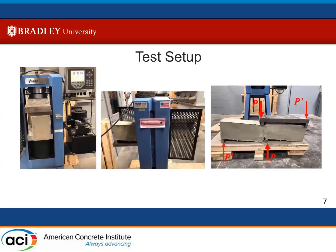My test setup used the compression testing machine from our laboratory, with two spreader plates and four rectangular rods used to concentrate the load at the points we wanted. The test would be run until the member failed, and we would record our maximum load and deflection from these tests.